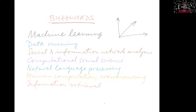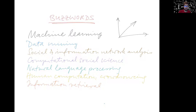I will start you off with a few buzzwords, maximum information gains, just so you know who you're dealing with. What do we do in the Data Science Lab? We do machine learning, mostly on the applied side, data mining, social and information network analysis, computational social science, natural language processing, human computation, crowdsourcing, and information retrieval.